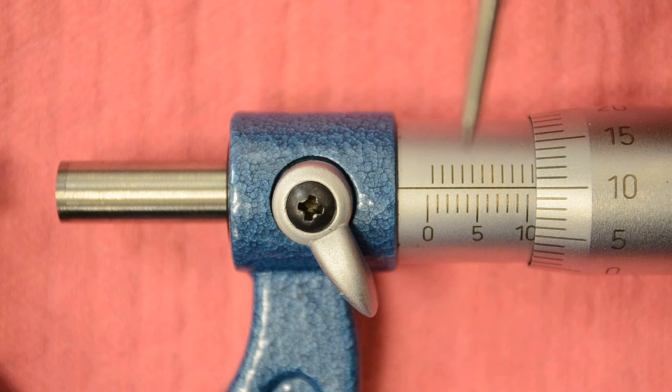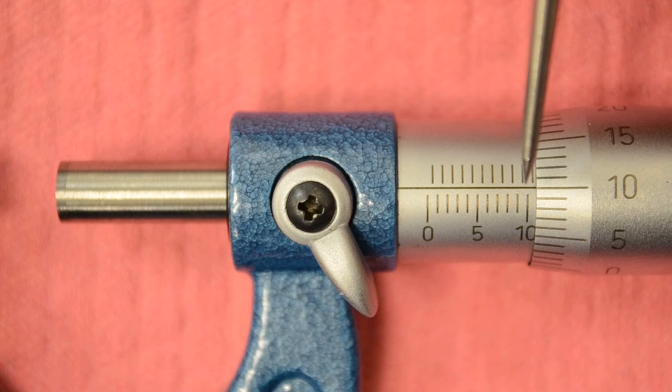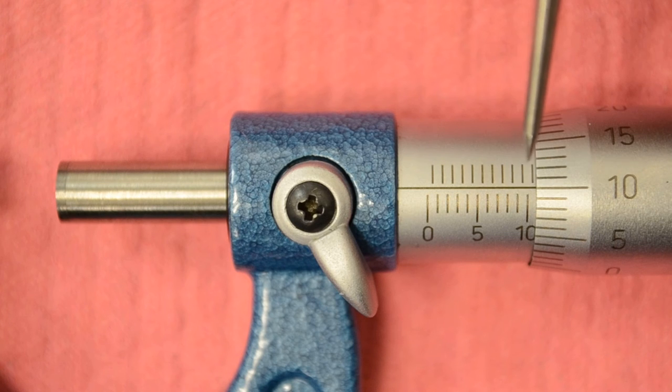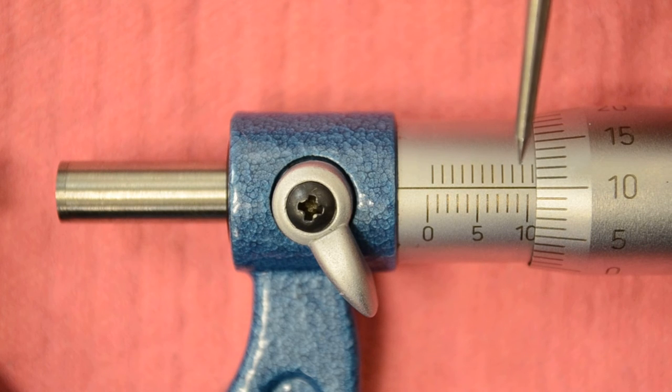And I really like them to touch and on the Starrett they do. So on this one here, this particular reading of this mic, it looks like we have 10 millimeters and we've just passed the half millimeter. So that would read 10.50. The half millimeters always read .50.